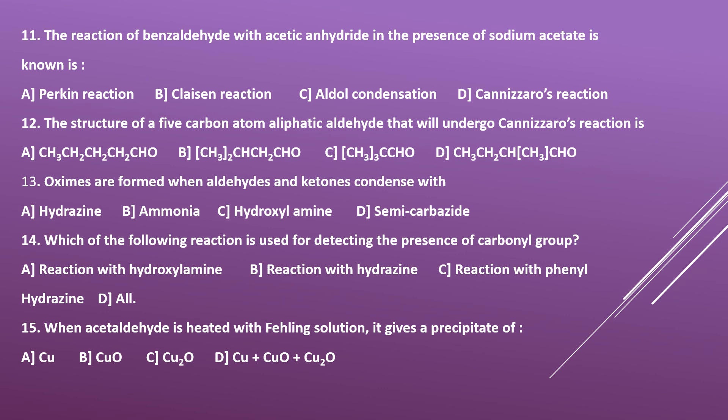Question number thirteen: oximes are formed when aldehydes and ketones react with — options: A) hydrazine (NH2NH2), B) ammonia, C) hydroxylamine (NH2OH), D) semicarbazide. The answer is option C — when aldehydes and ketones react with hydroxylamine, they produce oximes.